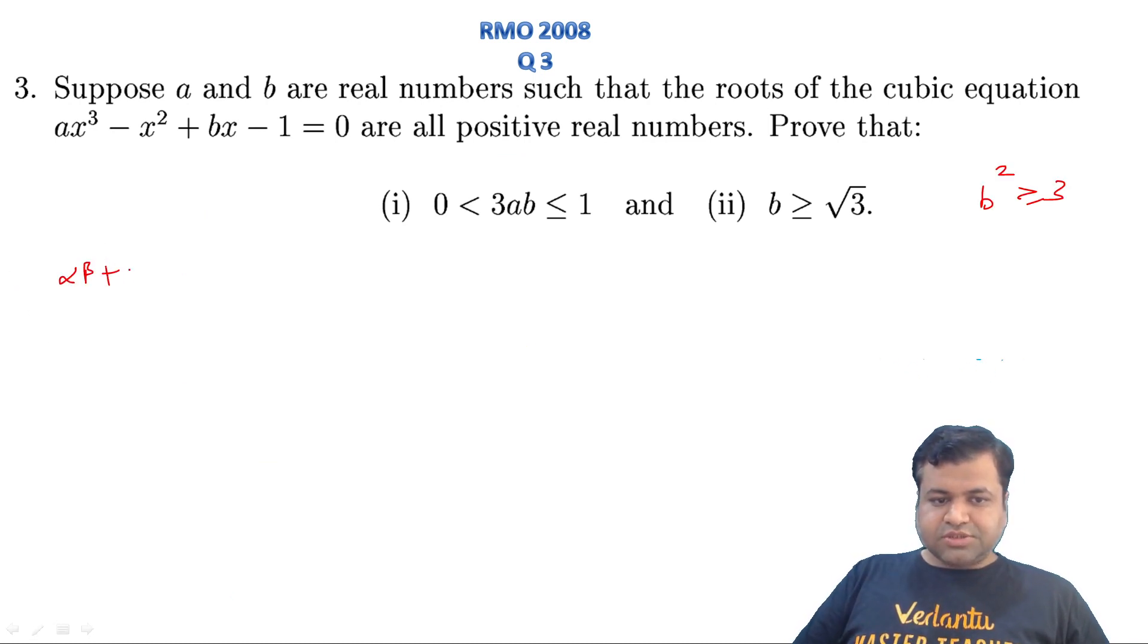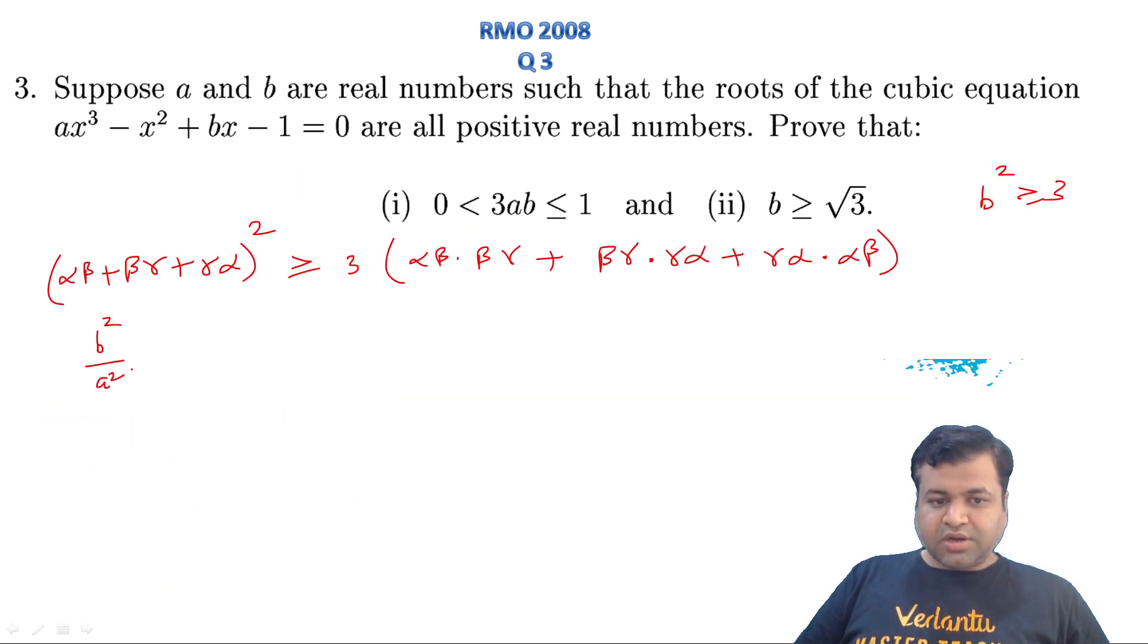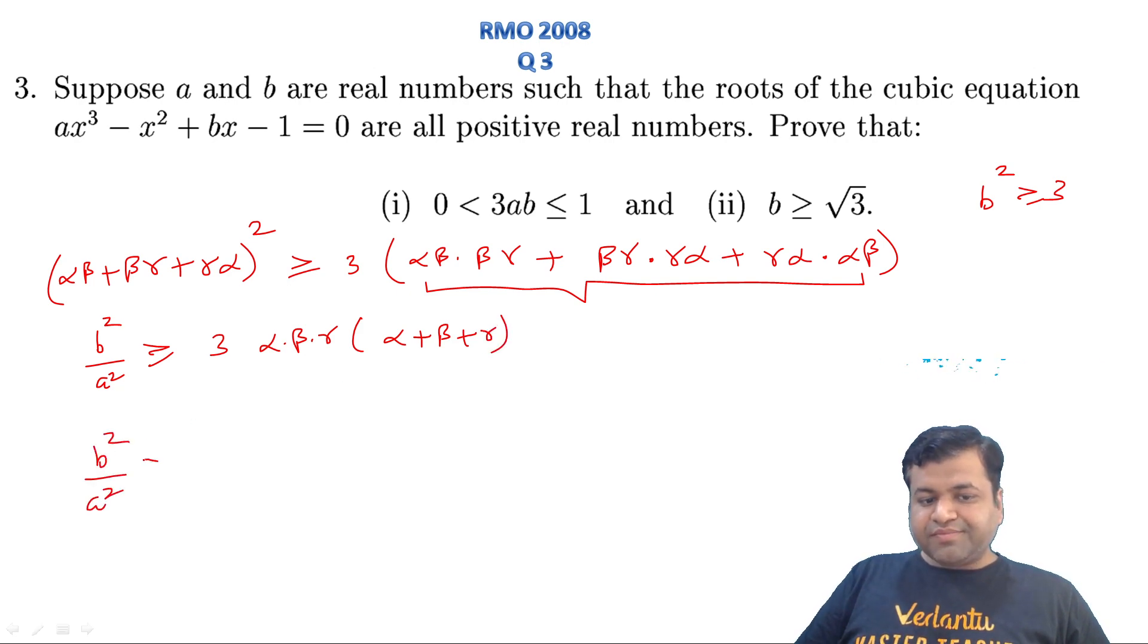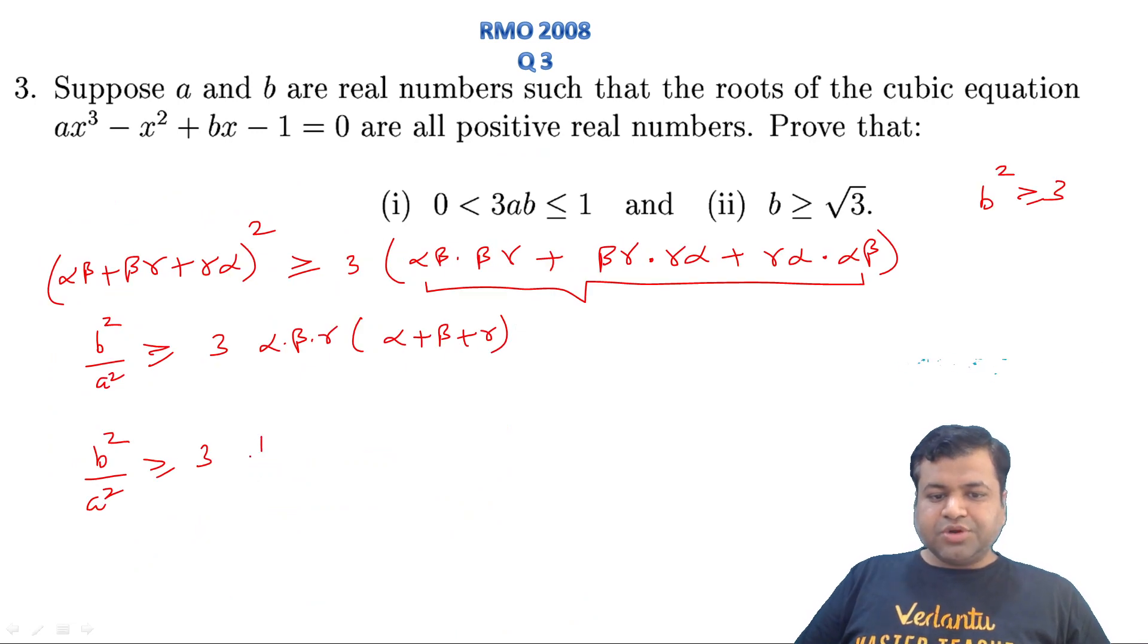We say (αβ + βγ + γα)² will be greater than or equal to 3 of product sum two by two: αβ·βγ + βγ·γα + γα·αβ. Now this is how much? This was b/a, sum of product taken two at a time. This is b²/a². Greater than or equal to three times, here if you think about it, αβγ common, αβγ three products common, and what remains is α + β + γ. These individual values, αβγ was 1/a and α + β + γ was 1/a, so just these two values are 1/a multiplied by 1/a, so a² and a² cancel out. So b² is greater than or equal to 3, which means that b ≥ √3, which is finished.